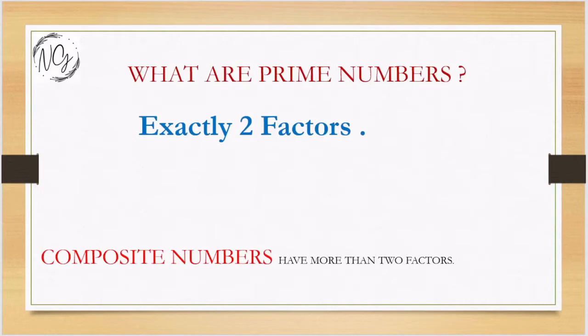The first question arises: what are prime numbers? Prime numbers are those numbers which have exactly two factors, examples 2, 3, 5, and composite numbers are those numbers which have more than two factors, examples 4, 6, 8.